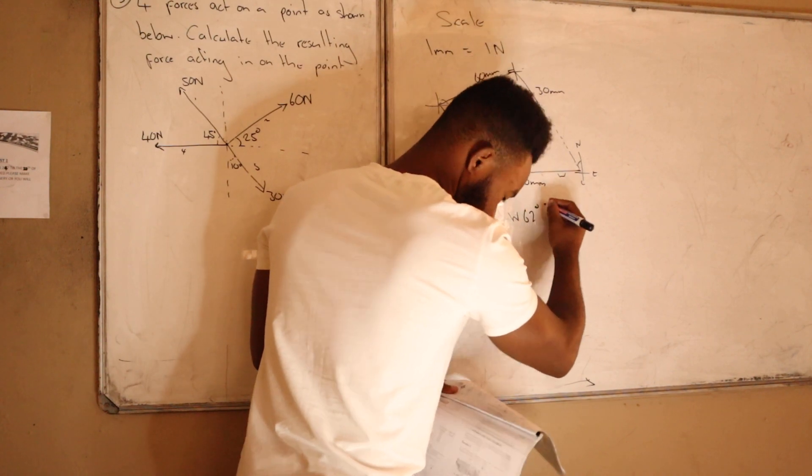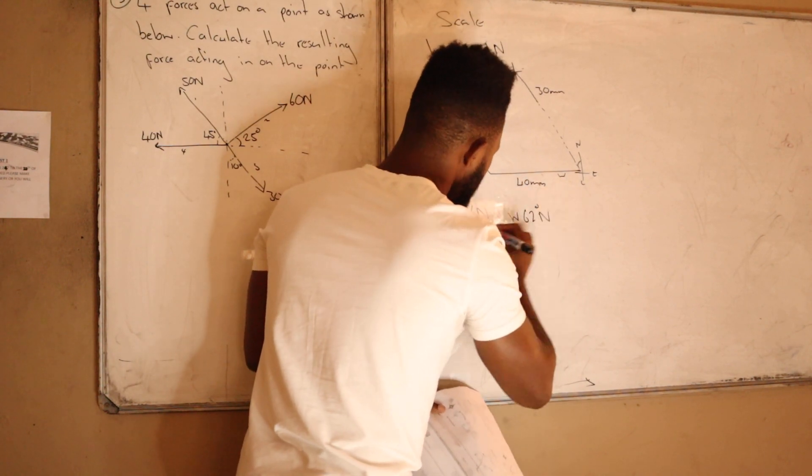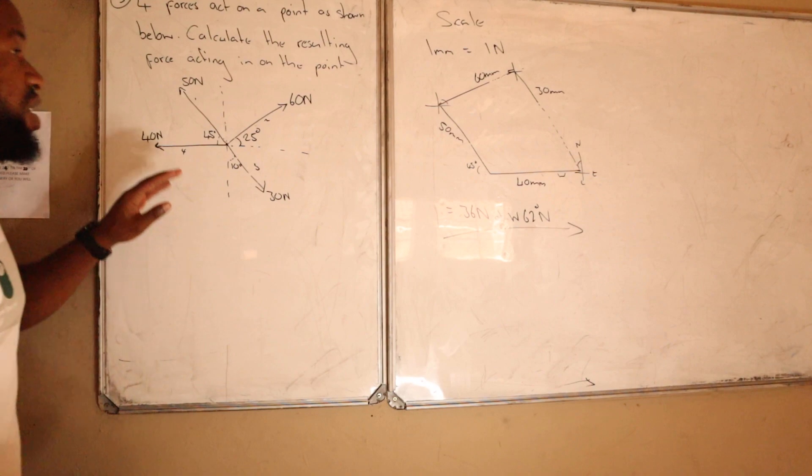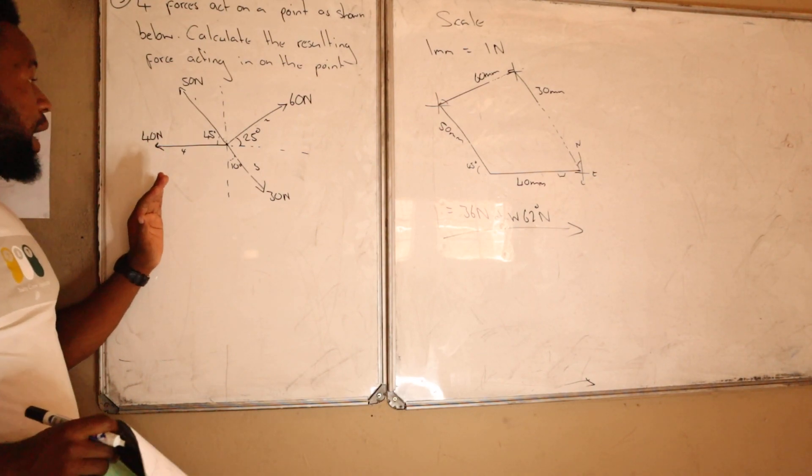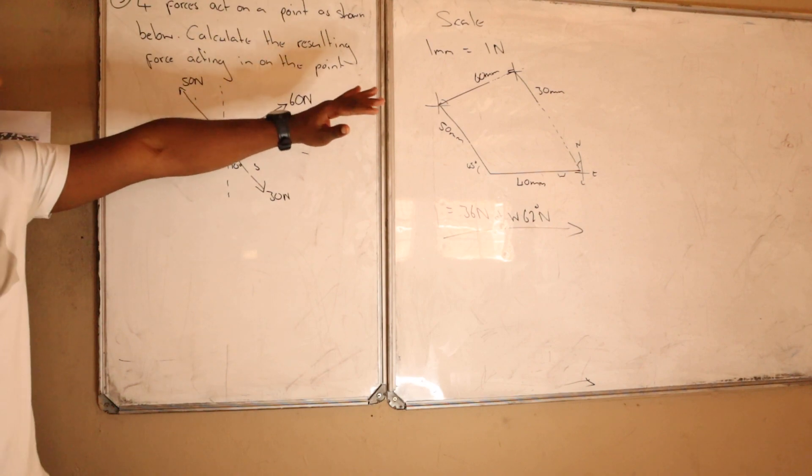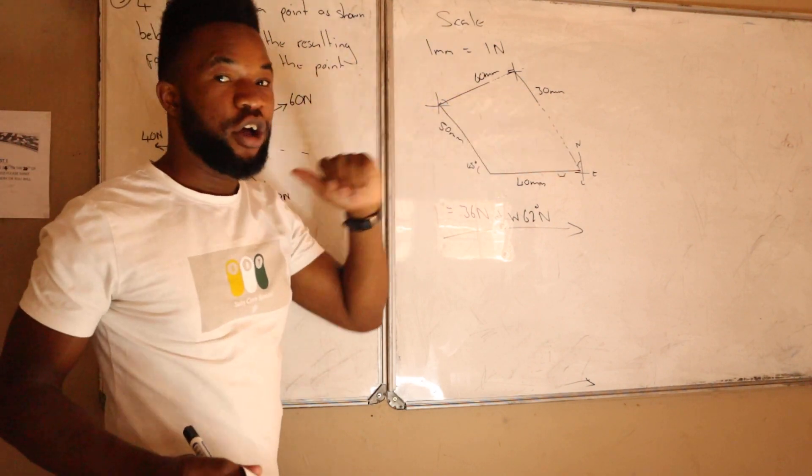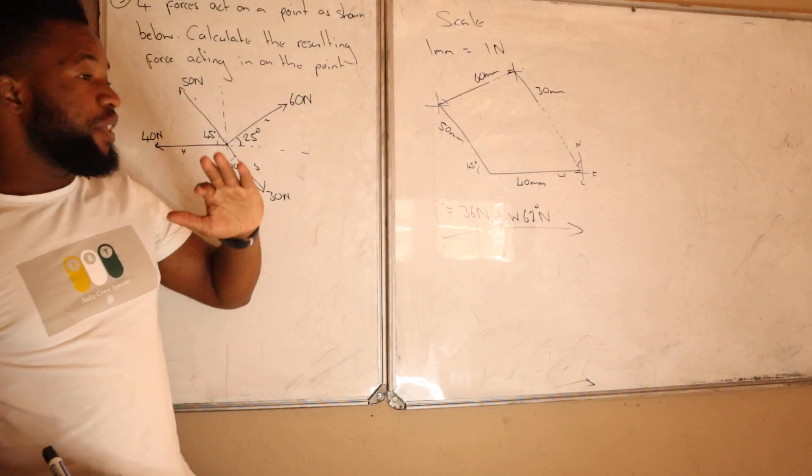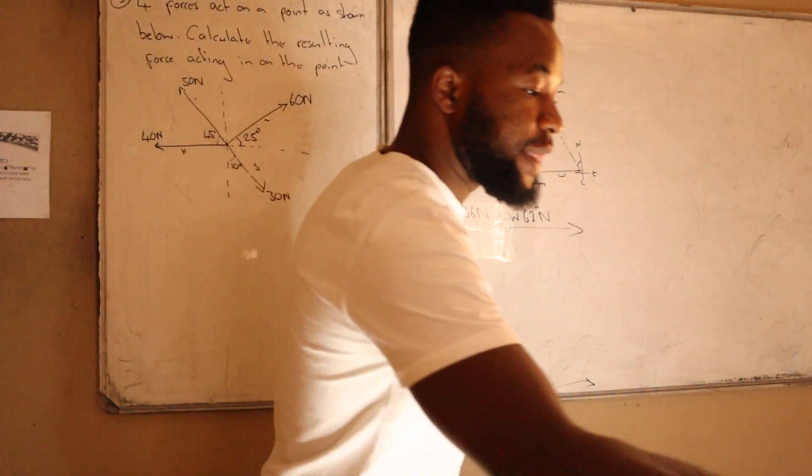So basically this is how you can treat it when you are given four forces acting at a certain point. You just have to join all the forces, try to get a shape, and then you can get your resultant. This is basically how you can treat vectors in different directions.